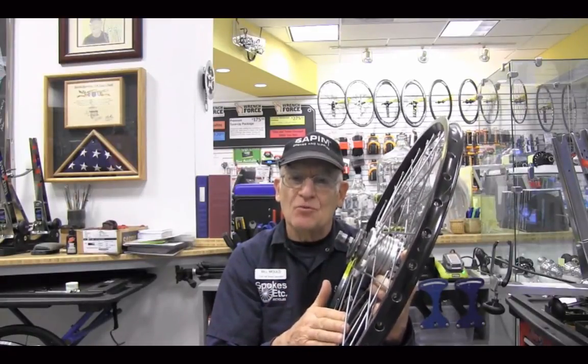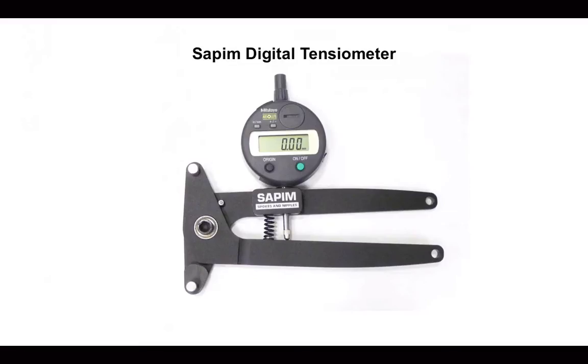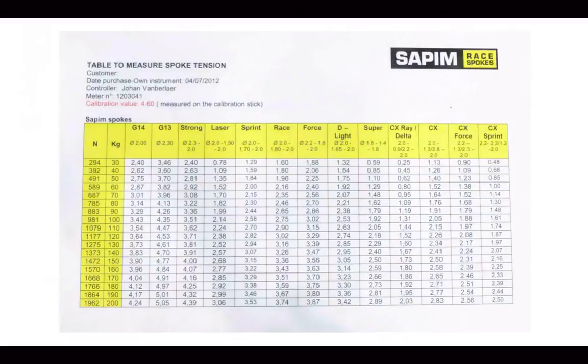This is my Sapim digital tensiometer and note the high-end Mitutoyo gauge. This is the conversion table that comes with the Sapim tensiometer. This row represents the tension I want on the spokes measured either as 1177 newtons or 120 kilograms of force.